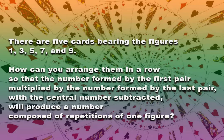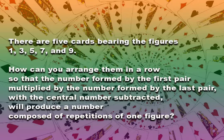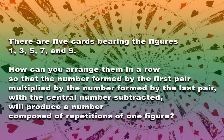How can you arrange them in a row so that the number formed by the first pair, multiplied by the number formed by the last pair, with the central number subtracted, will produce a number composed of repetitions of one figure?